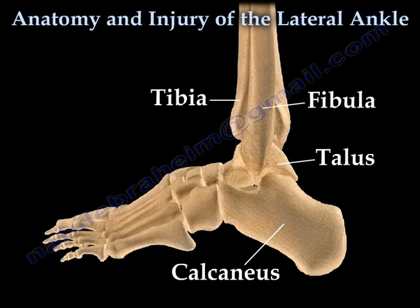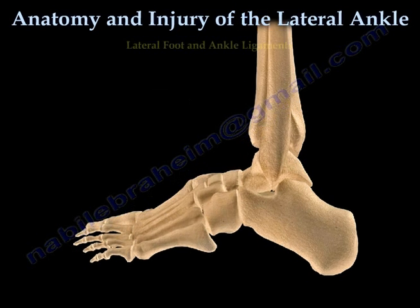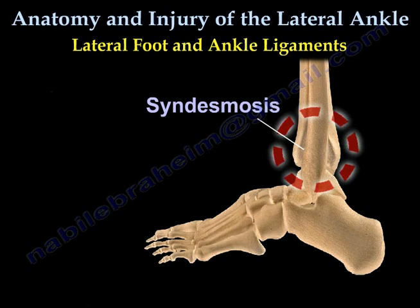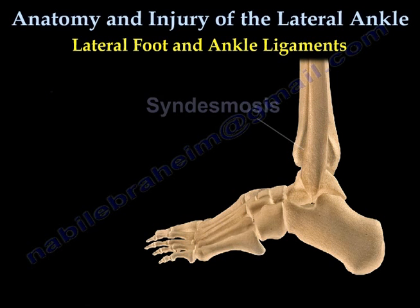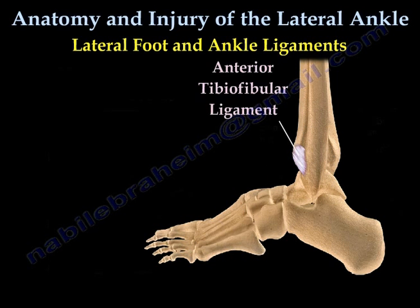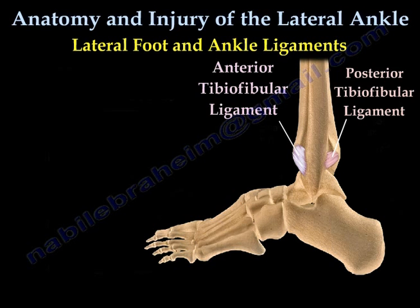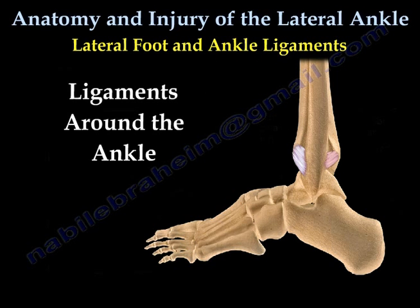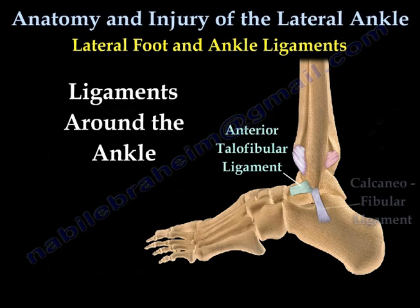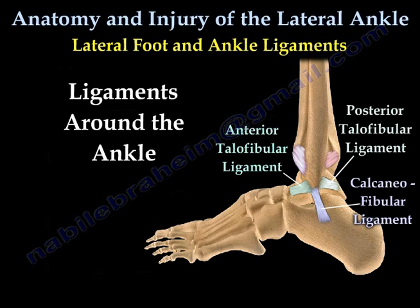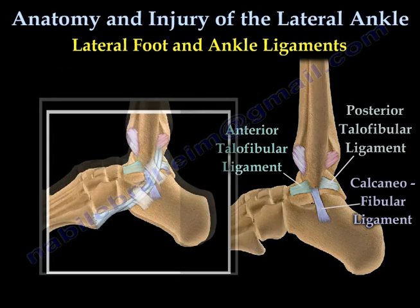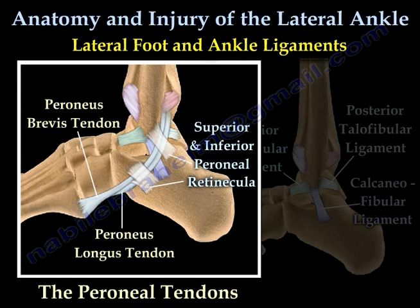The bony structures of the ankle consist of the tibia, fibula, the talus, and the calcaneus. Ligaments of the ankle include the syndesmosis, the anterior tibiofibular ligament, and the posterior tibiofibular ligament. Ligaments around the ankle include the anterior talofibular ligament, the calcaneofibular ligament, and the posterior talofibular ligament. Here you can see the peroneal tendons, which run behind the fibula.